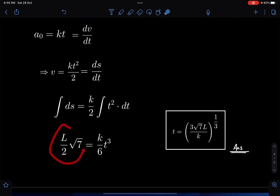So I am writing it as L by 2 root 7, and this will become kt cubed by 6. From here the time of travel we will get, if we simplify this, we are going to get t equals 3 root 7L by k times 1 by 3—it is power 1 by 3. So this is going to be the final answer.